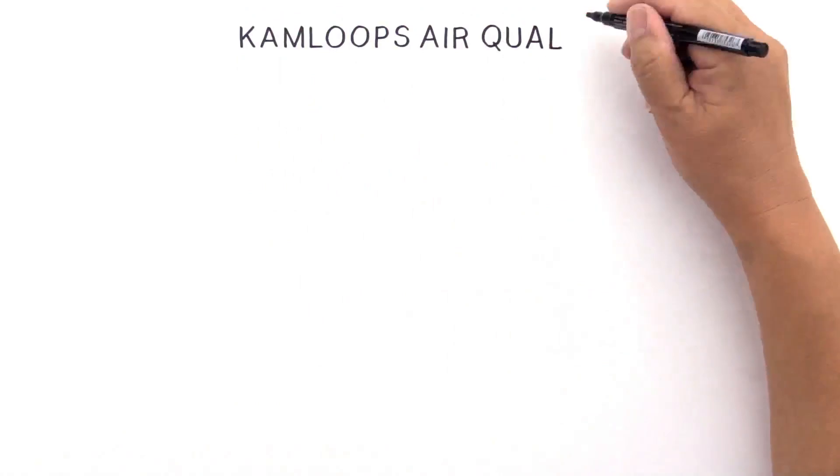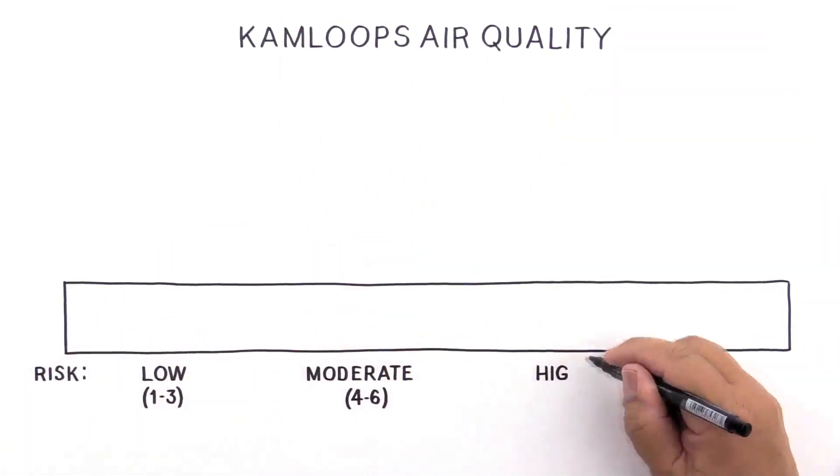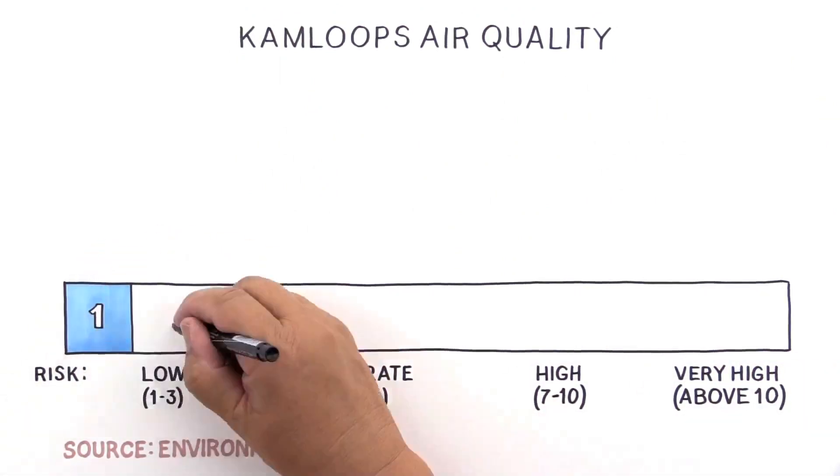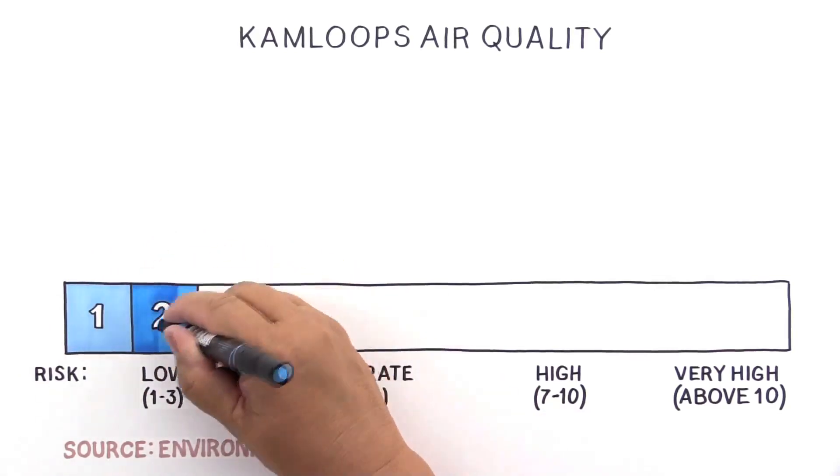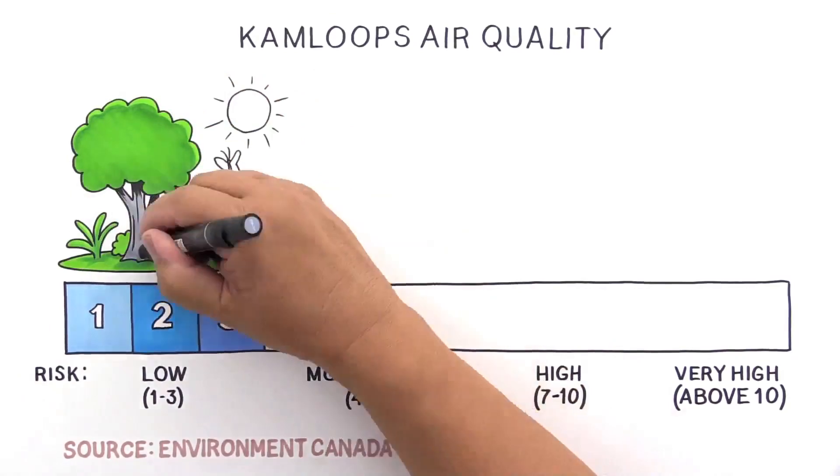In BC, the Ministry of Environment monitors air quality and real-time results are provided as part of the Air Quality Health Index. On a 10-point scale that looks at three major pollutants including PM2.5, Kamloops is usually in the lowest risk range. Kamloops air is good almost all year.